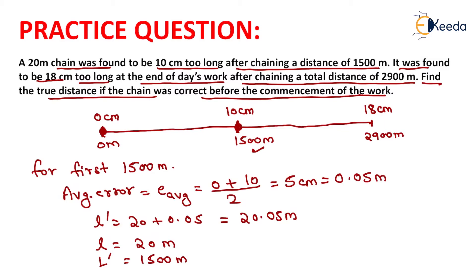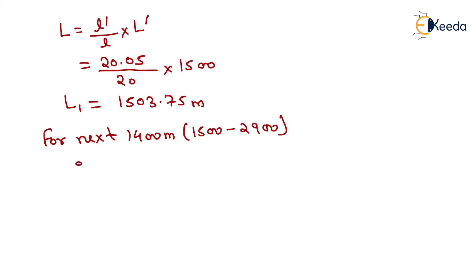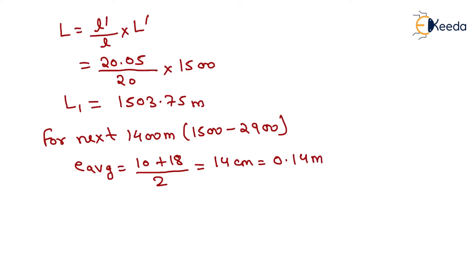Now for the next 1400 meters, that is from 1500 to 2900, we calculate the average error. Its value equals (10 plus 18) divided by 2, because up to 1500 meters the extension was 10 centimeters and at 2900 meters it was 18 centimeters. The average error equals 14 centimeters, or 0.14 meters. So small l' equals 20 plus 0.14, which is 20.14 meters, and small l equals 20 meters.